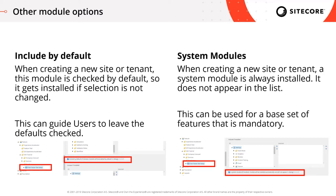If you want to be more restrictive, there's also the option to mark a module as a System Module. A system module installs the module as mandatory — when you create a new site, this module is always installed and doesn't even appear in the list of optional modules. This is useful for a base set of features or components you want in every site, so users don't have to think about whether to install it.